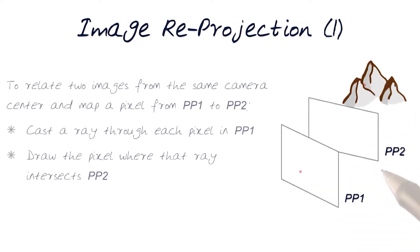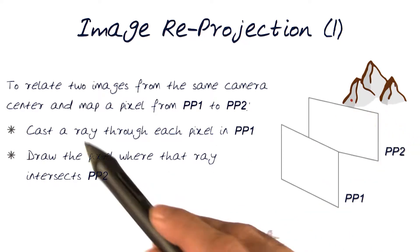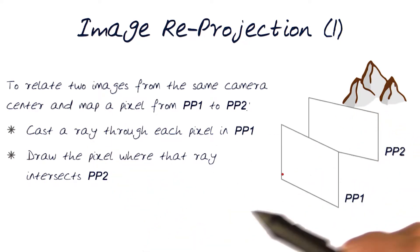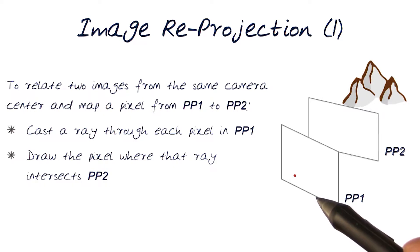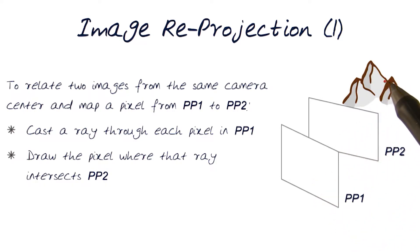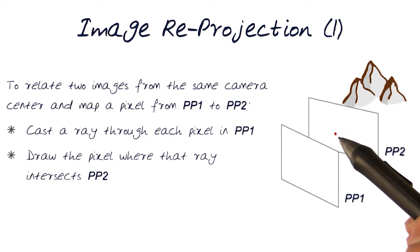This is the scene we're capturing. So what we're interested in is relating these two images which have been taken from the same camera, and map a pixel that is in this scene from both PP1 and PP2.